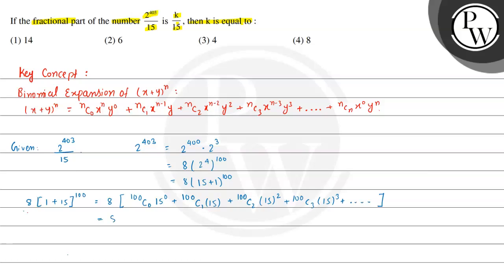Here we can write this as 8 multiplied by... 100C0 is 1 and 15^0 is also 1, so we get 1 plus, and from all the remaining terms we can take 15 common. So we get 15 multiplied by (100C1 + 100C2·15 + 100C3·15^2 and so on).